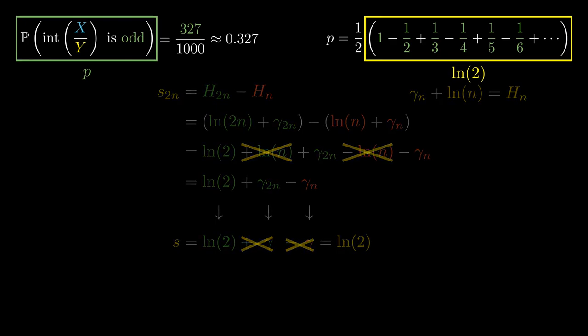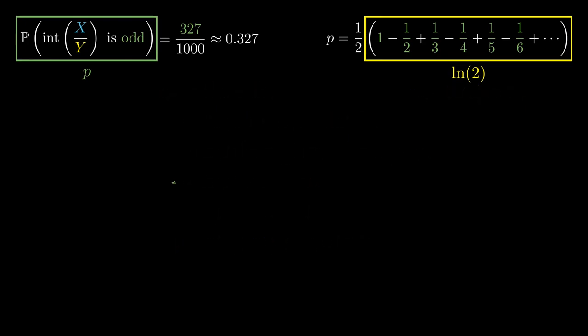But piecing together the pieces of the puzzle, the required probability is half times the log of 2, which approximates 0.346, which is not too far off from our experimental value of 0.327. But for another problem using real analysis to solve, click on the video here.